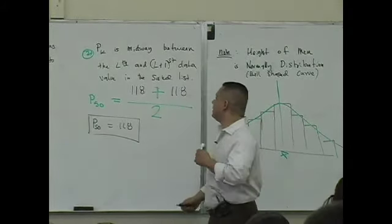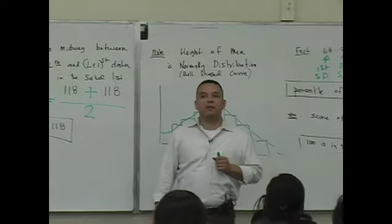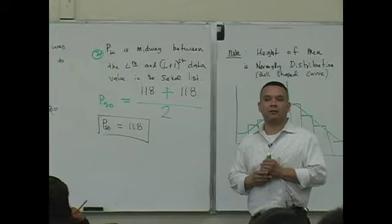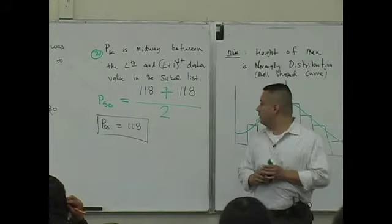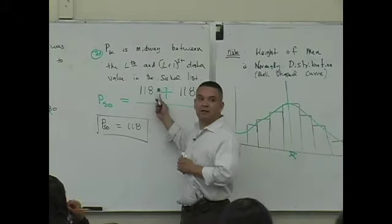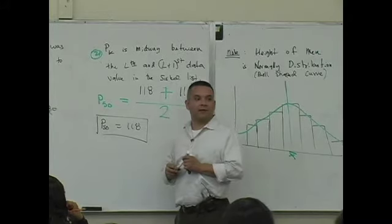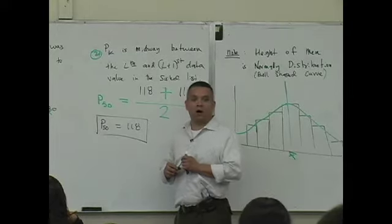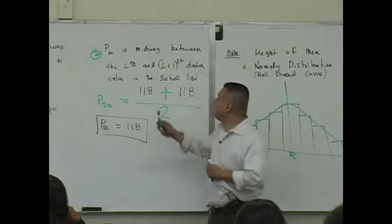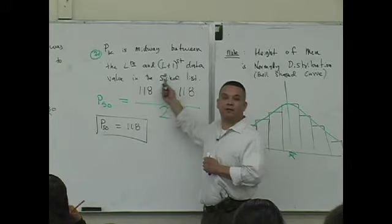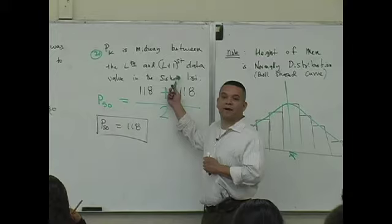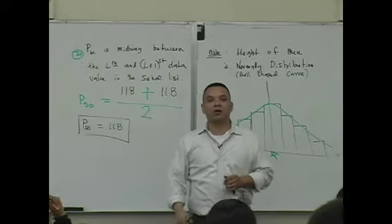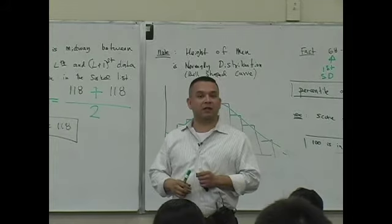What's the second thing? You know what the biggest mistake people make on this? Some people put 15 plus 16 and they find the number midway between 15 and 16. They put 15.5. Wrong. Why is it wrong? They're not looking at the what? They're not looking at the fine print. The L and L plus first data value in the sorted list. So you're looking for data values on that list, not the position 15 plus 16. It's the data values.